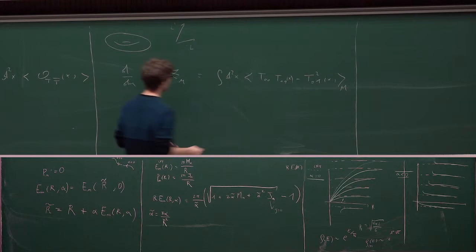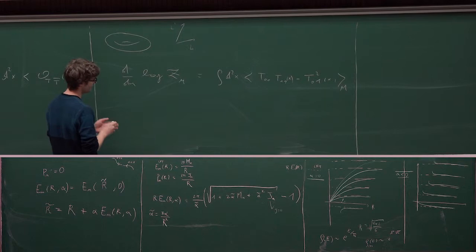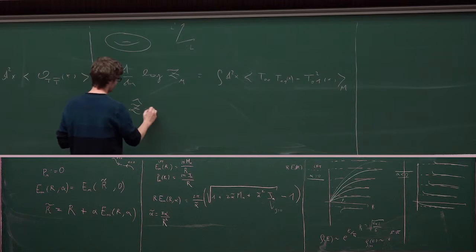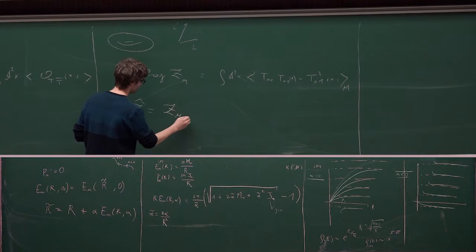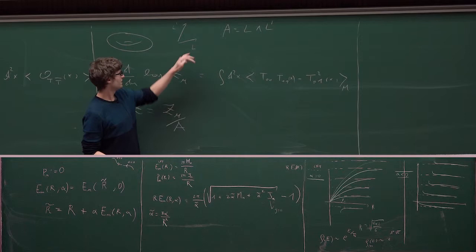And what you find at the end is that you can rewrite it in terms of the deformations of the sizes of the torus, therefore. So, the result that you would get at the end that I don't have time to discuss is, essentially, that if you rewrite everything in terms of some object where I defined it as the partition function on the torus divided by the area of the torus, which is... So, I consider these two vectors.